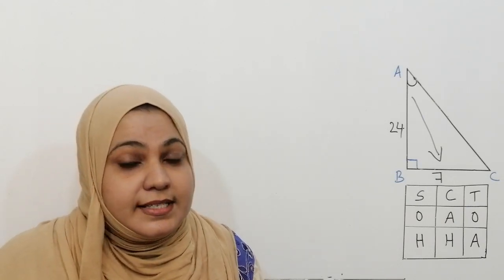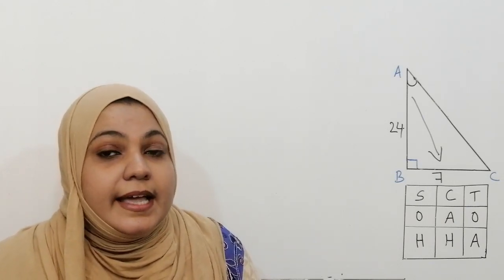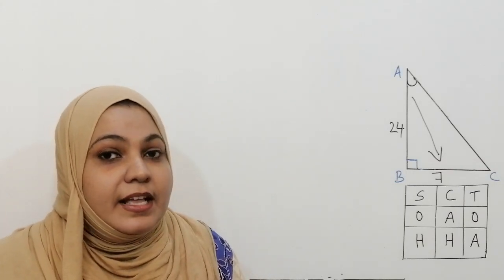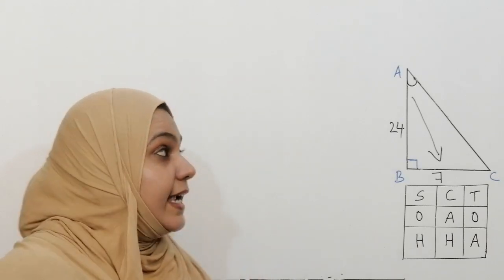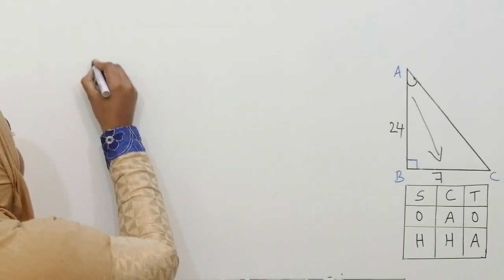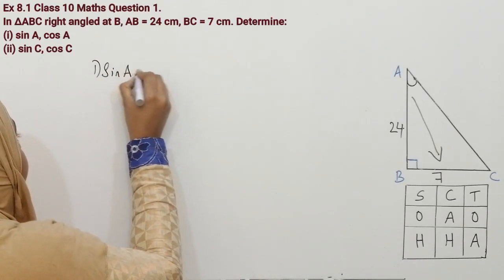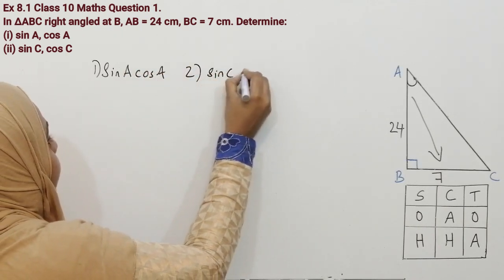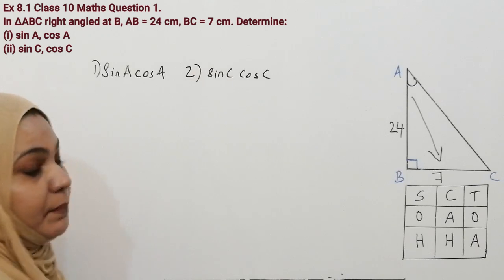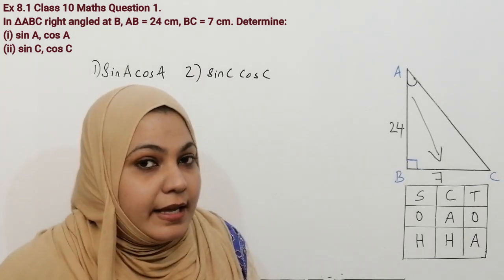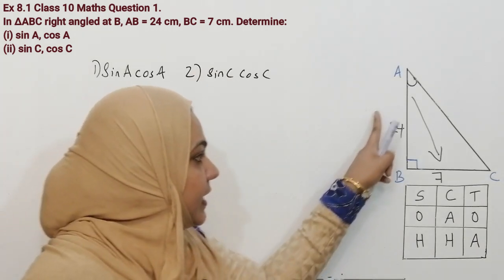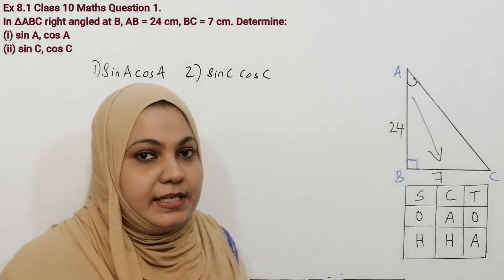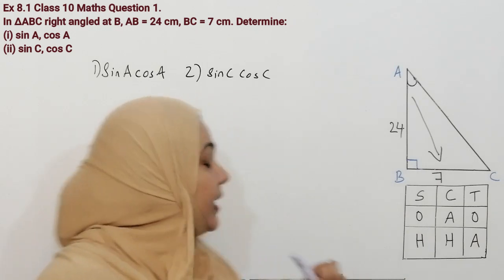Our first question is: in triangle ABC, AB is equal to 24 centimeters and BC is equal to 7 centimeters. You have to find sin A, cos A, and the second question is sin C, cos C. I will repeat the question — in triangle ABC, AB is equal to 24 centimeters and BC is equal to 7 centimeters. There are two sub-questions in this question.